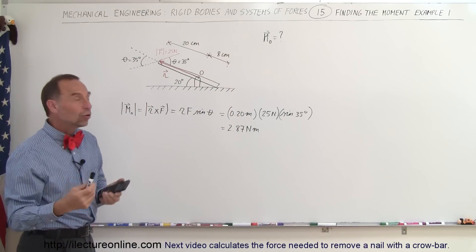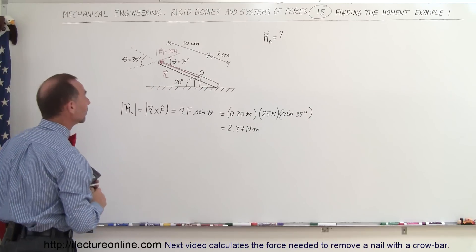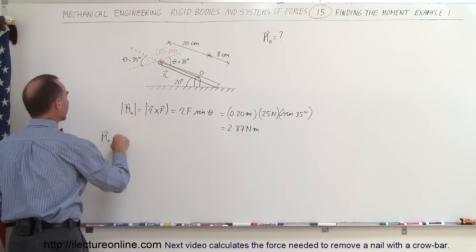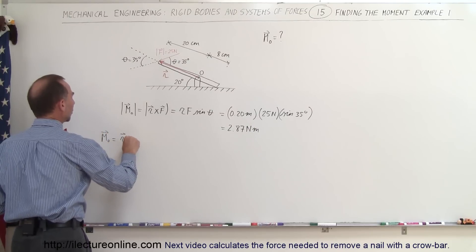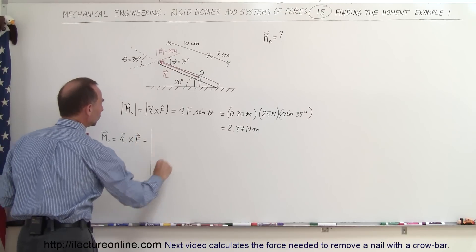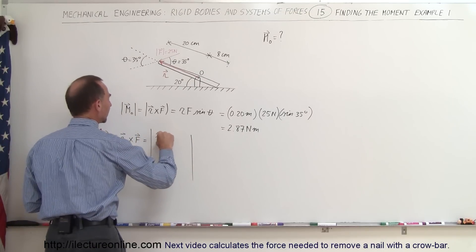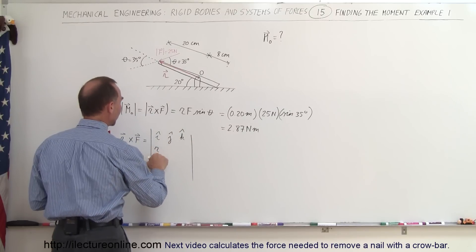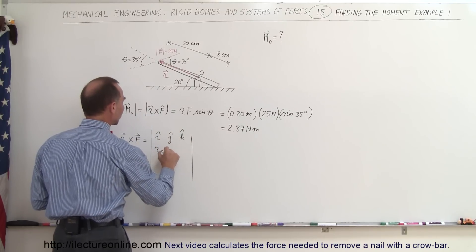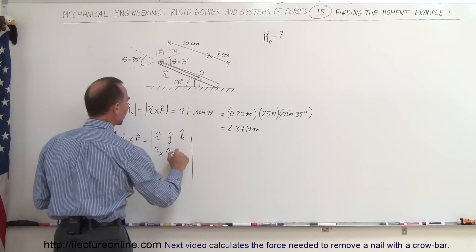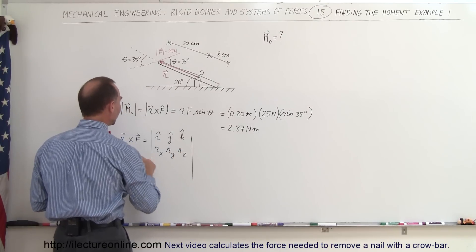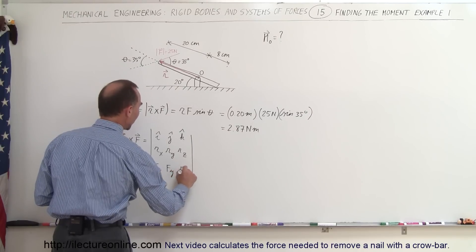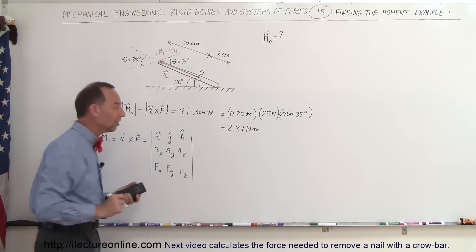Can we also find that using the typical vector product? Yes, we can. The moment equals R cross F, which is expressed using the I, J, and K unit vectors as a determinant: the magnitude of the position vector in the X, Y, and Z directions in the first row, and the magnitude of the force in the X, Y, and Z directions in the second row.